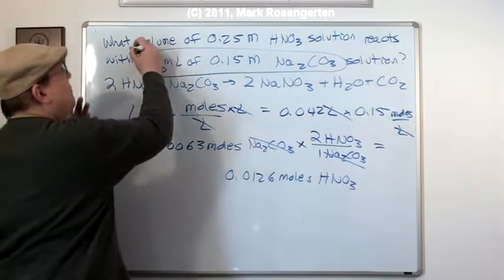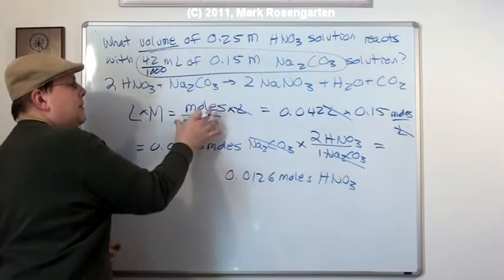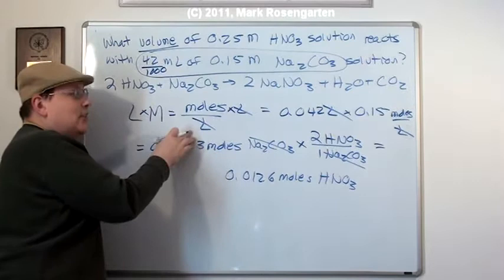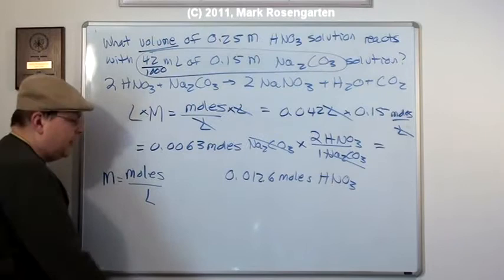But the question is asking, what volume of 0.25 molar? Okay, well, that's fine. We're going to use this same equation now that we know moles and we know molarity to find liters. Now, with liters in the denominator, the first thing you need to do is get liters the heck out of the denominator. So we'll multiply both sides by liters.